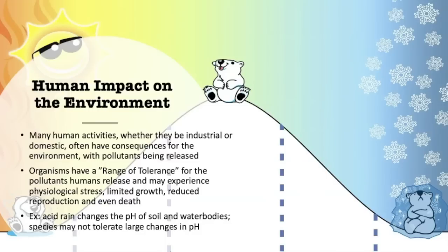What we often see is that organisms in the environment, and even sometimes the environment itself, have what we call a range of tolerance. For example, a polar bear is going to have a tolerance level for what is optimal, what is suboptimal, and what is completely not tolerated by that species.